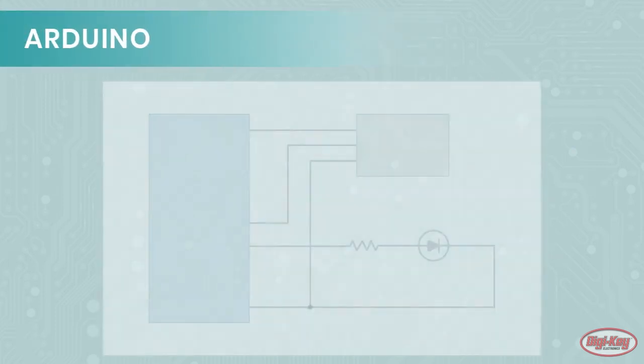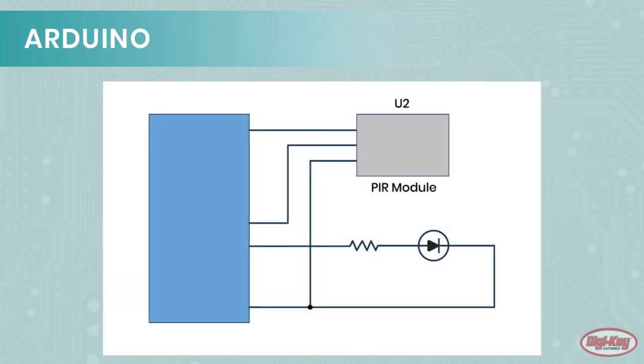In our circuit, we take advantage of the Adafruit PIR motion sensor module, which not only handles the complex circuitry, but also provides two potentiometers so the module can output pulses at varying lengths and delays.